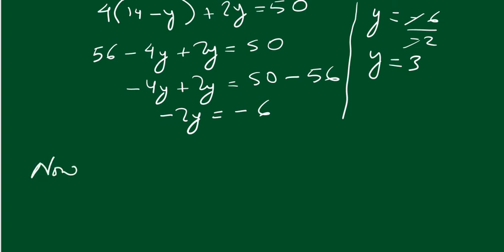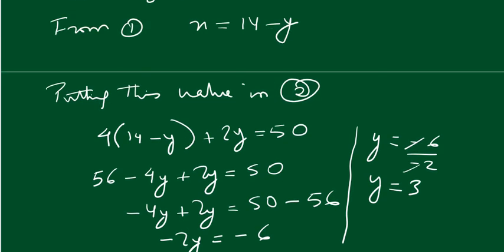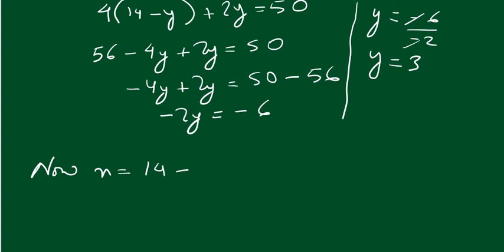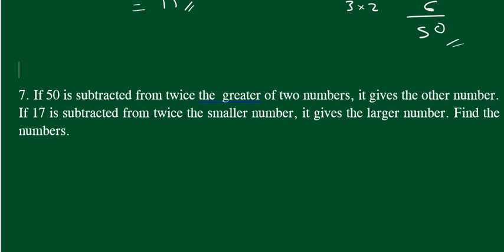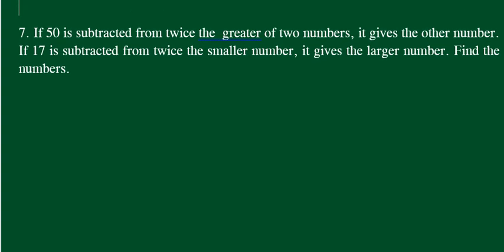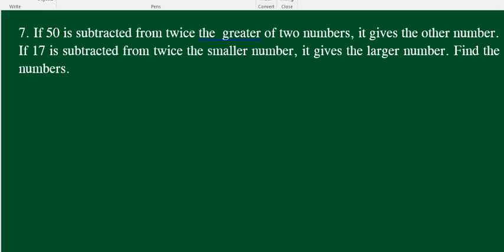Now x equals 14 minus y. Since y equals 3, x equals 14 minus 3, which is 11. So there are 11 pins and 3 pencils. This completes the first equation and problem.